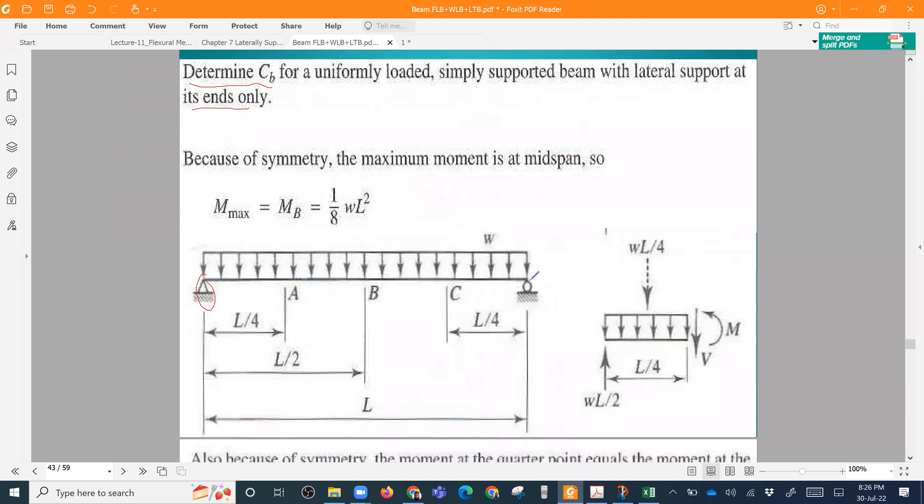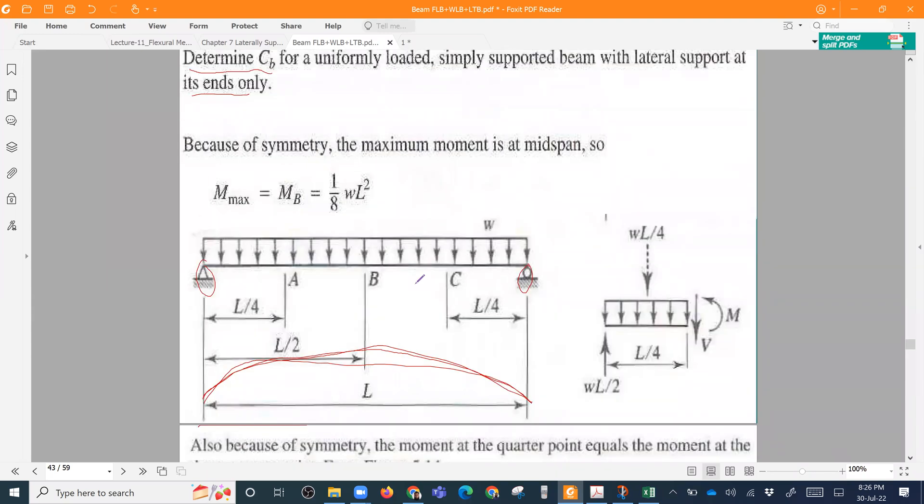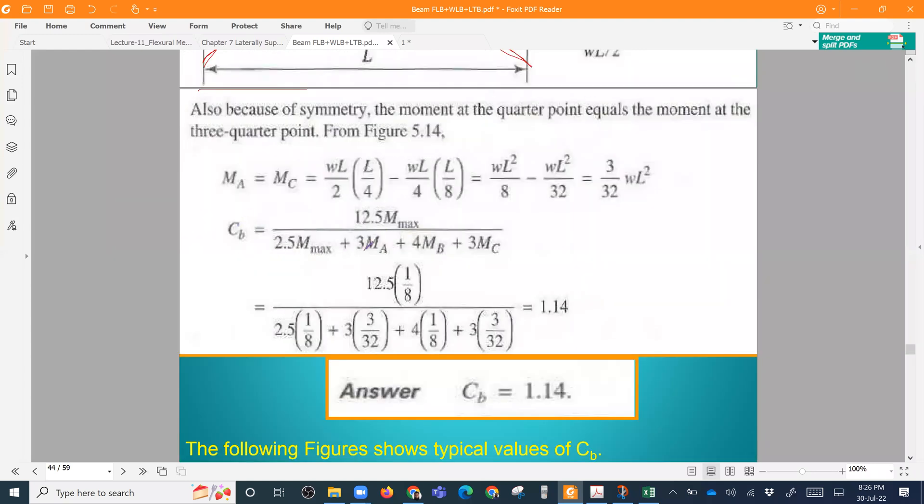So this is my whole length. This is our lateral torsional buckling. We know that this is the moment diagram. This is kind of half-circular. So this is our CB formula. The key CB formula is CB equals to 12.5 M max divided by 2.5 M max, 3 M A, 4 M B and 3 M C.